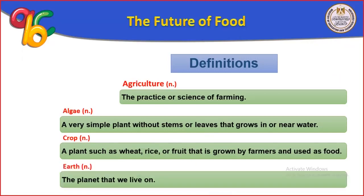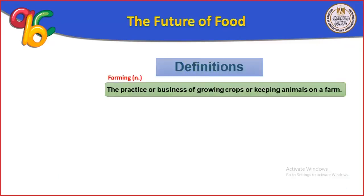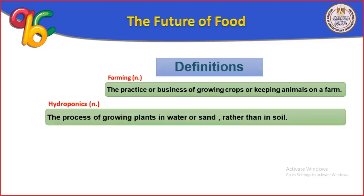Earth is the planet that we live on. Farming is a business or the practice of growing crops or keeping animals on a farm — farming includes both agriculture and animal keeping. Hydroponics is a process of growing plants in water or sand rather than in soil, يعني الزراعة في الماء أو الرمل بغض النظر عن التربة.